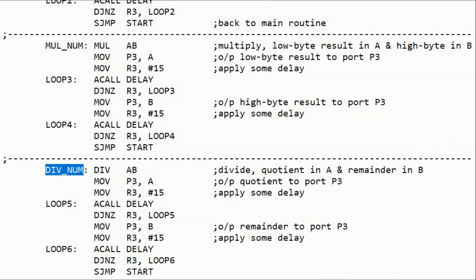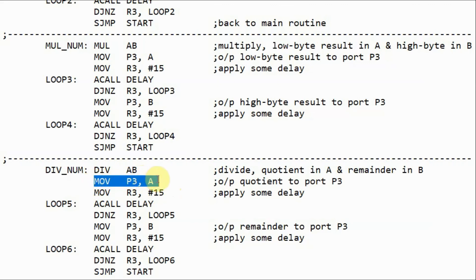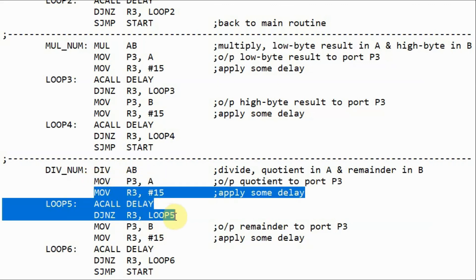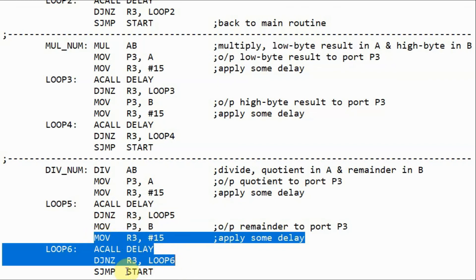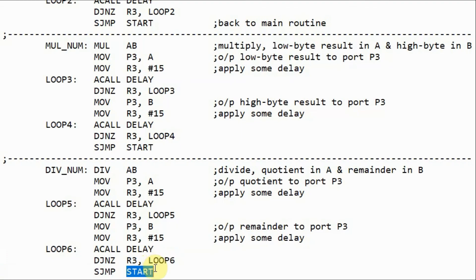Finally, we press the division button and the program jumps to the division subroutine. The program applies the division: A divided by B. The quotient will be stored in the accumulator and the remainder will be stored in register B. We output the quotient, apply some delay, then output the remainder, apply some delay, and then return back to start.